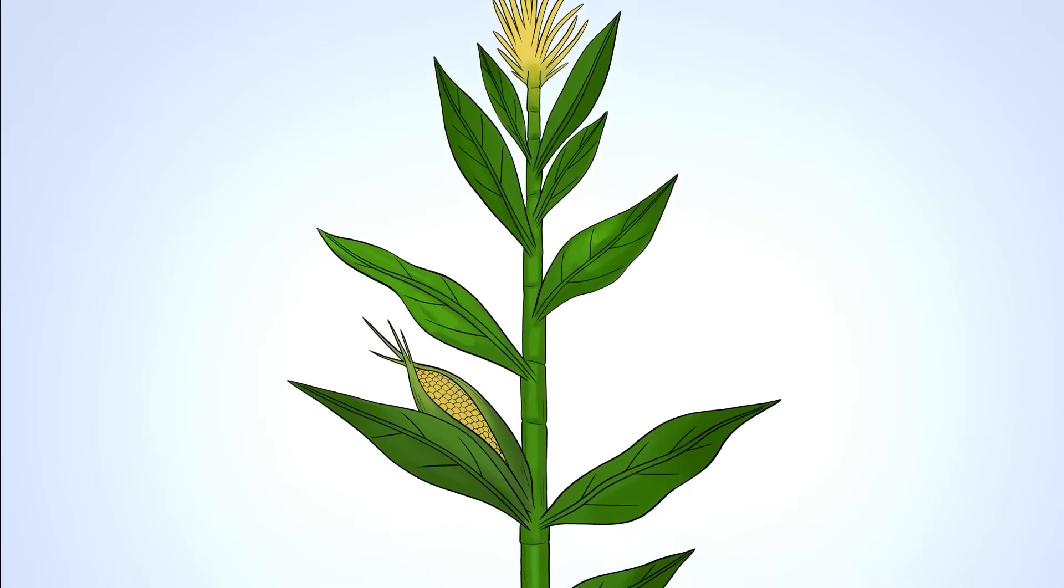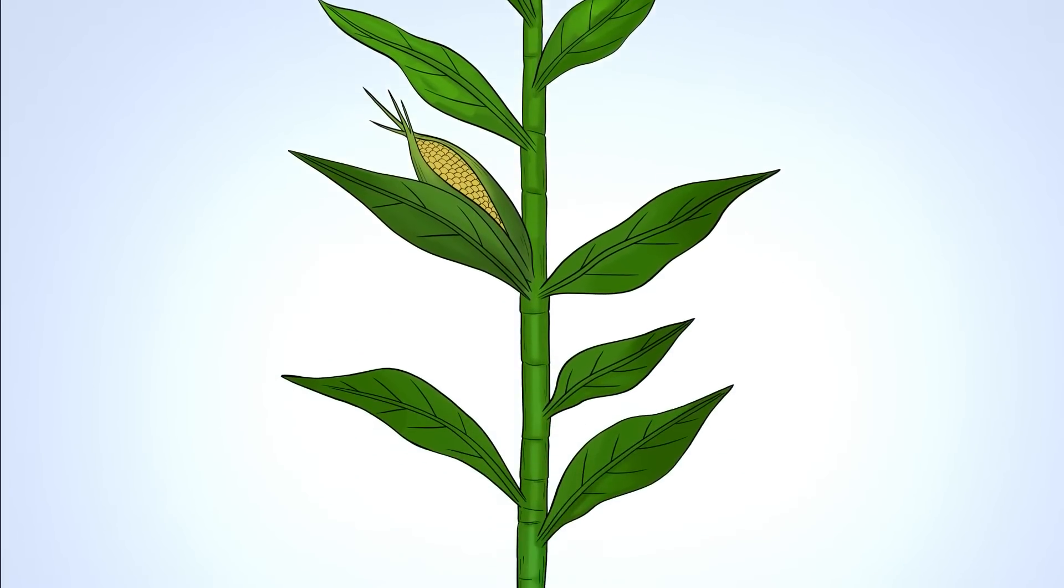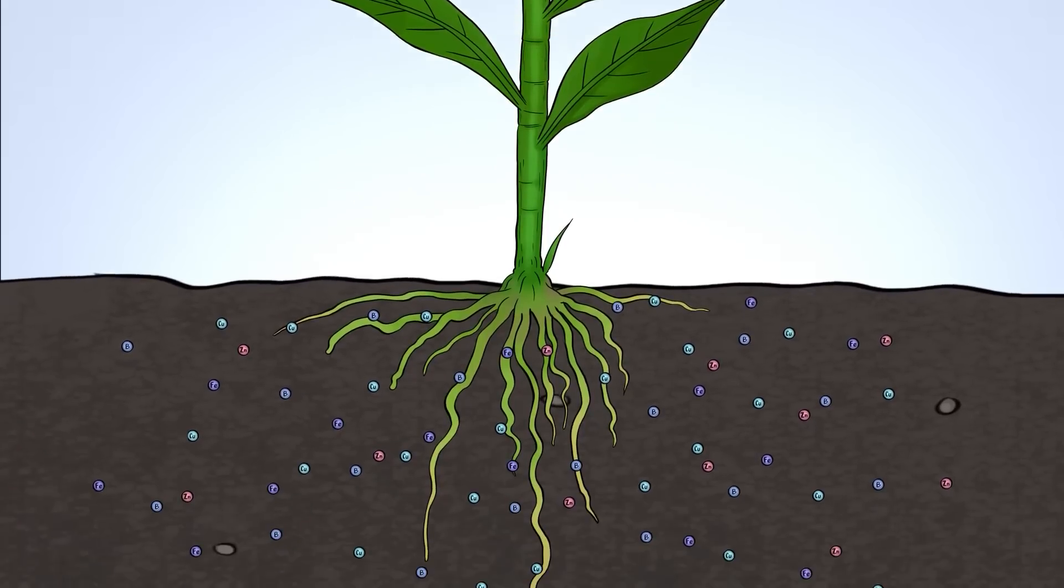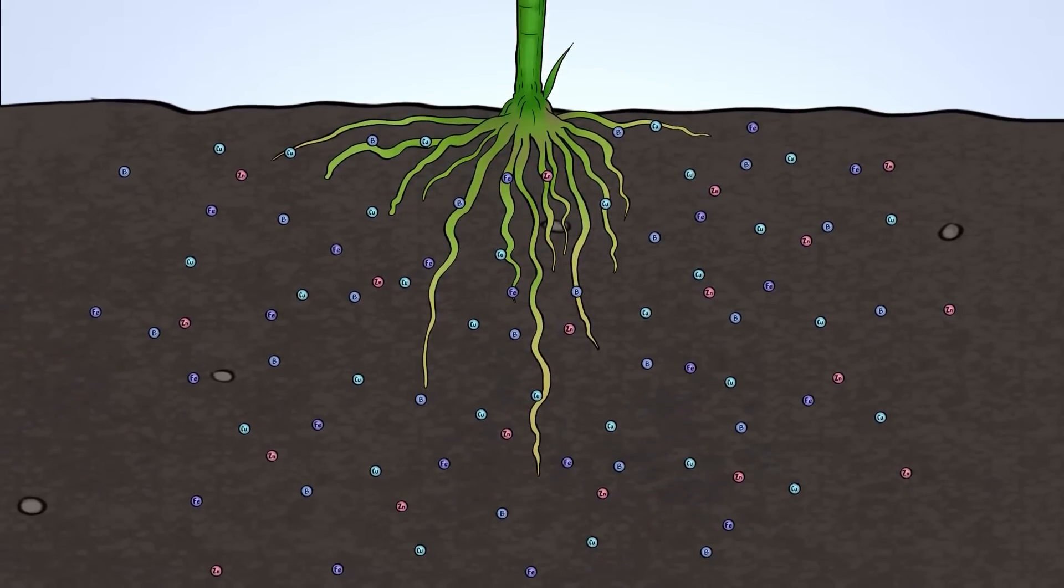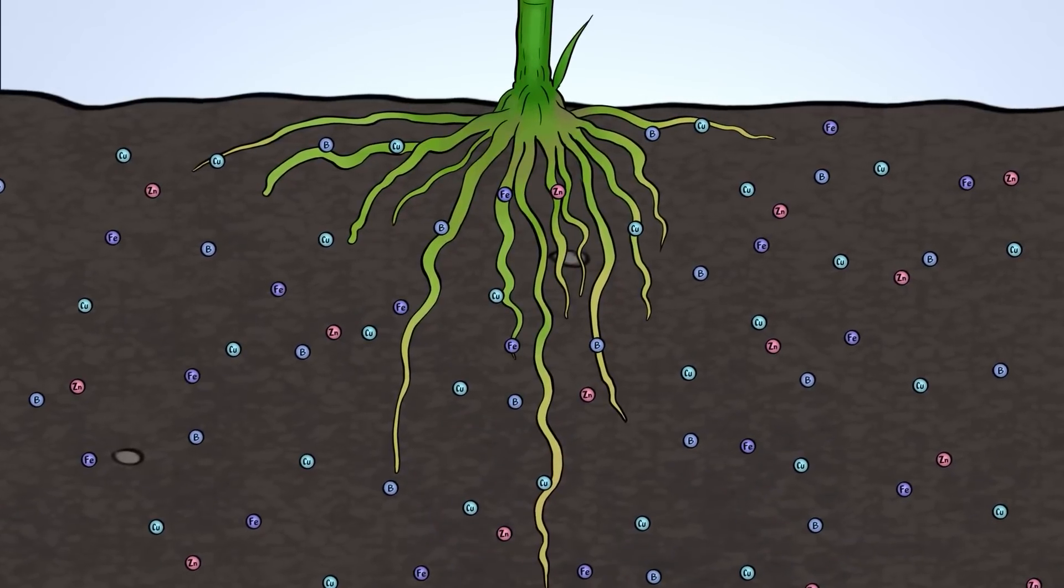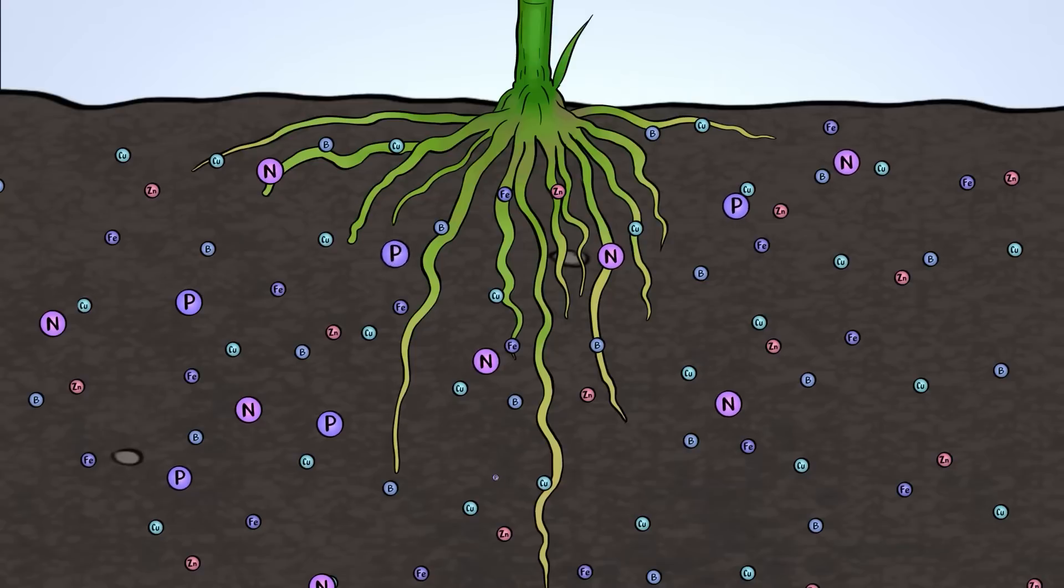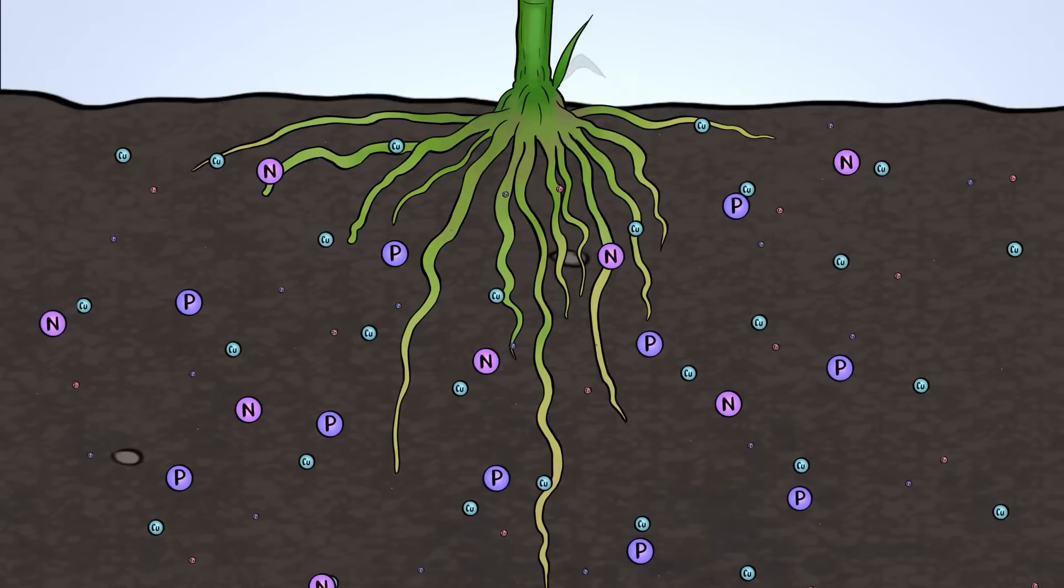Micronutrients can sometimes seem like an afterthought, but the reality is that they play a crucial role in a crop reaching its full potential. Plants may not need a great quantity of micronutrients as they do nitrogen and phosphorus, but a micronutrient deficiency can be just as damaging to plant health and yield.